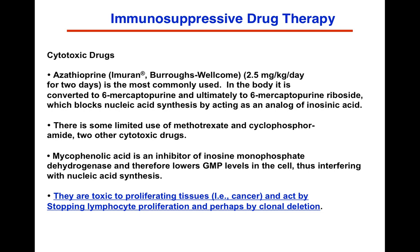For drug therapy, there are two classes. The first class are cytotoxic drugs. Azathioprine, or Imuran, has been the most commonly used over the decades. In the body, it's converted to 6-mercaptopurine and ultimately 6-mercaptopurine nucleoside, which blocks nucleic acid synthesis by acting as an analog of inosinic acid. It is effective against proliferating tissue.